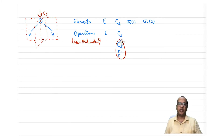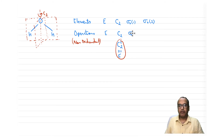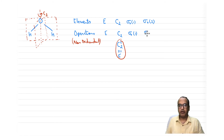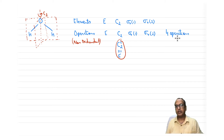We don't need to consider C2-squared because it is equivalent to E. Sigma-v1 generates one operation and sigma-v2 generates one operation. So we have four symmetry elements and four non-redundant operations total. This number is important — we will return to it later.